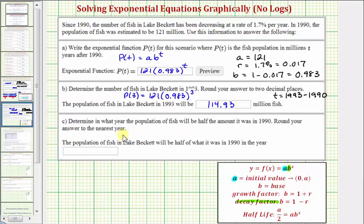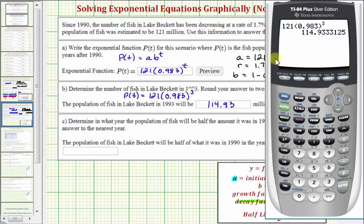Because we're going to solve C graphically, I also want to show another way that we can find this function value. Let's go ahead and enter p of t in y1. To do this, we'll press y equals, clear out any old function. Press clear, enter, and clear, go back up to y1, and we'll enter 121 times 0.983, close parenthesis, raise to the power of x. We'll use x on the calculator, not t.